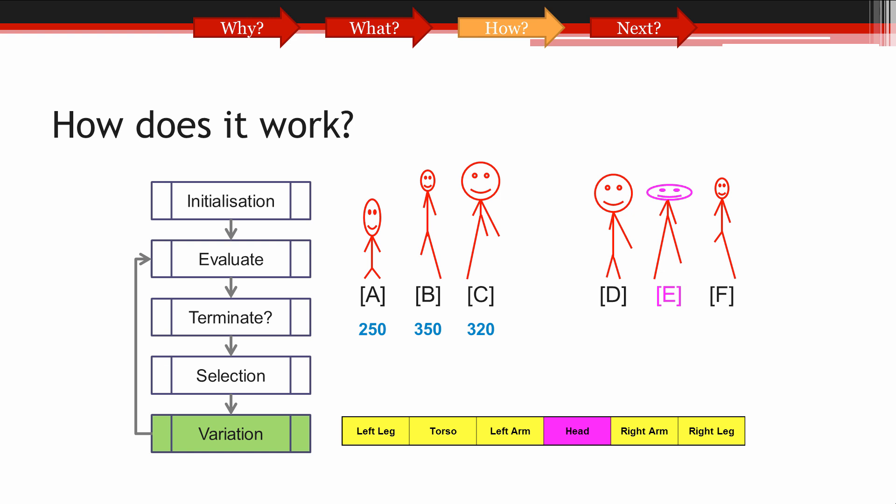With mutation, all we do is select a random gene on the chromosome of a randomly selected solution. Then we add a random number to this gene. This introduces new genetic information into our population. This is important as it allows us to explore different types of solution which may perform better on our problem.